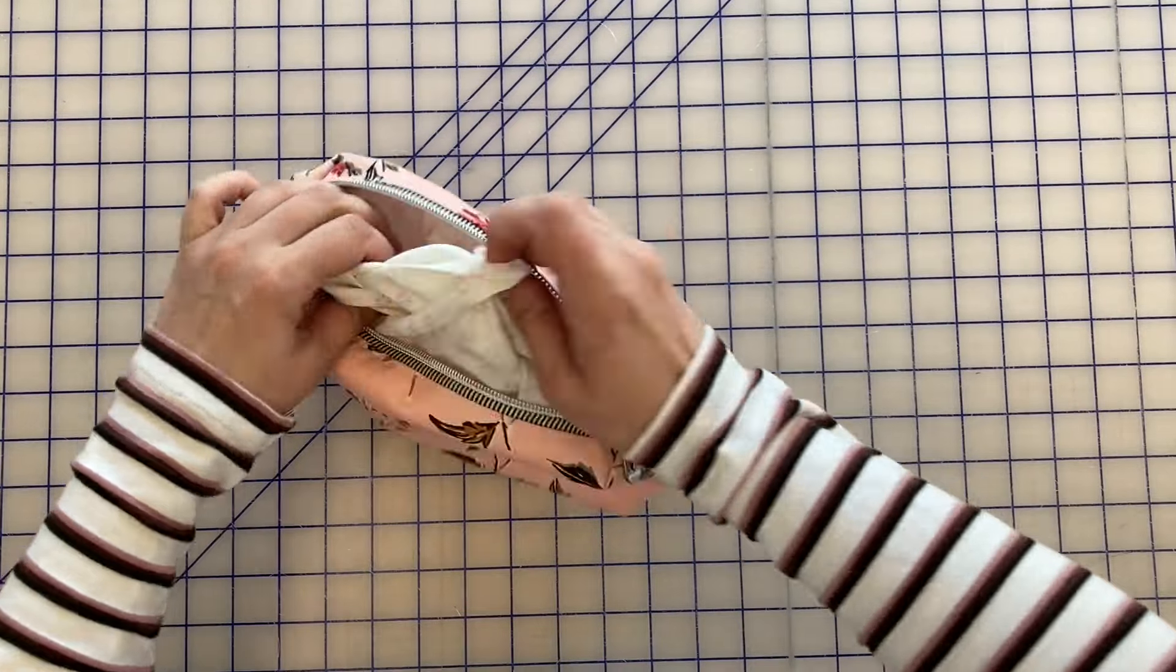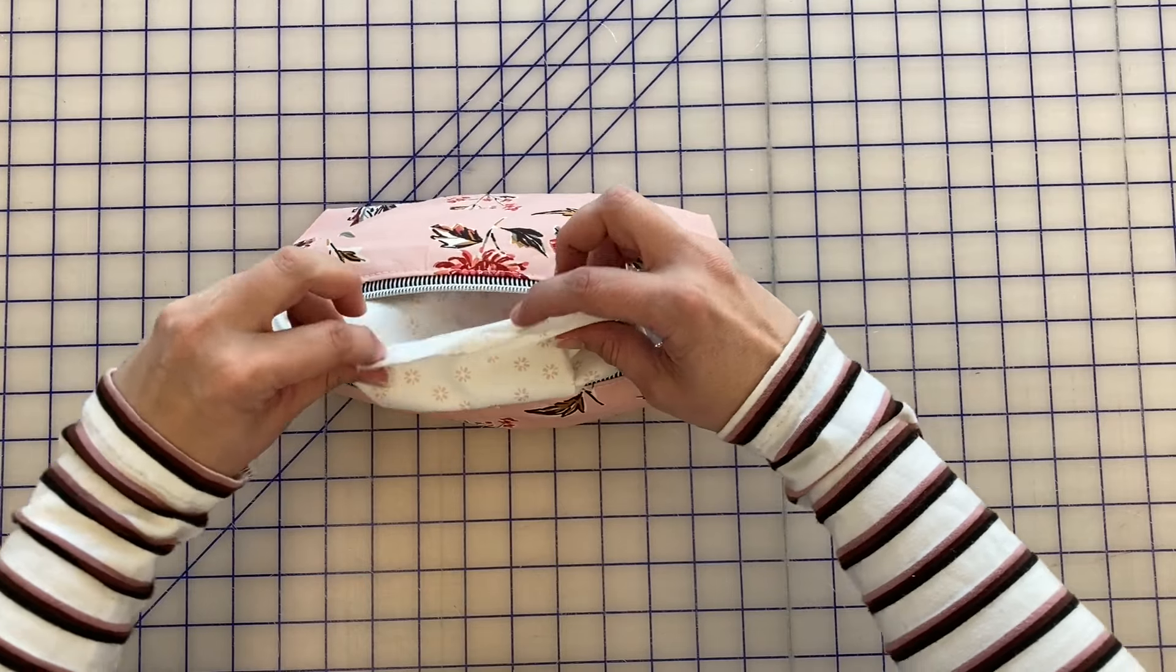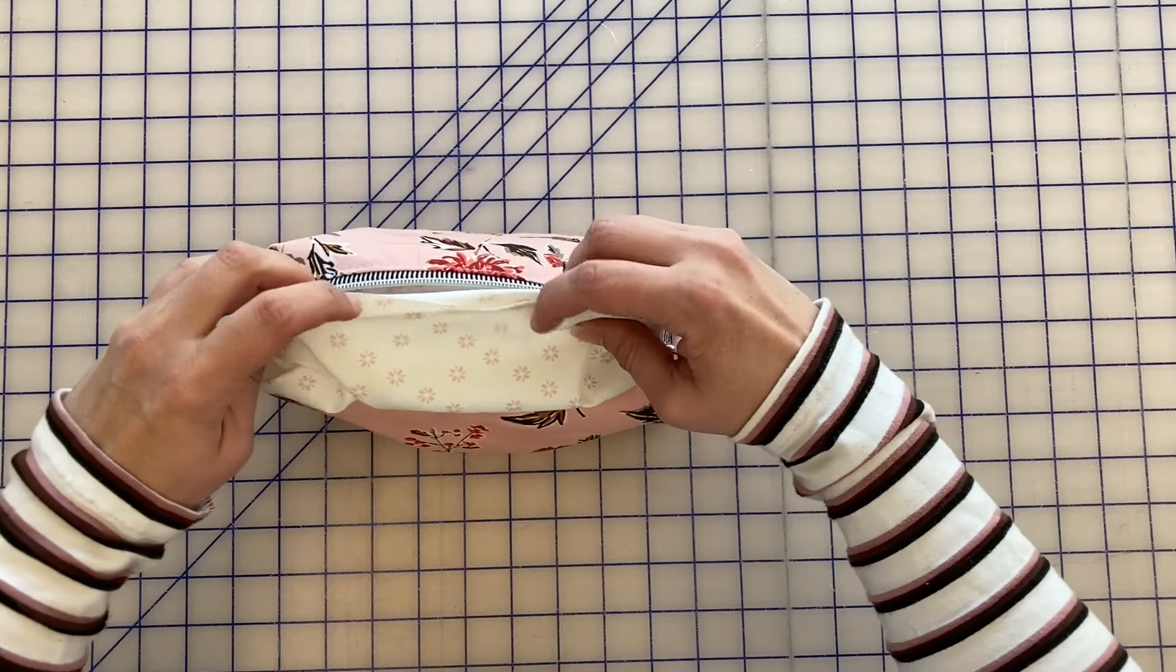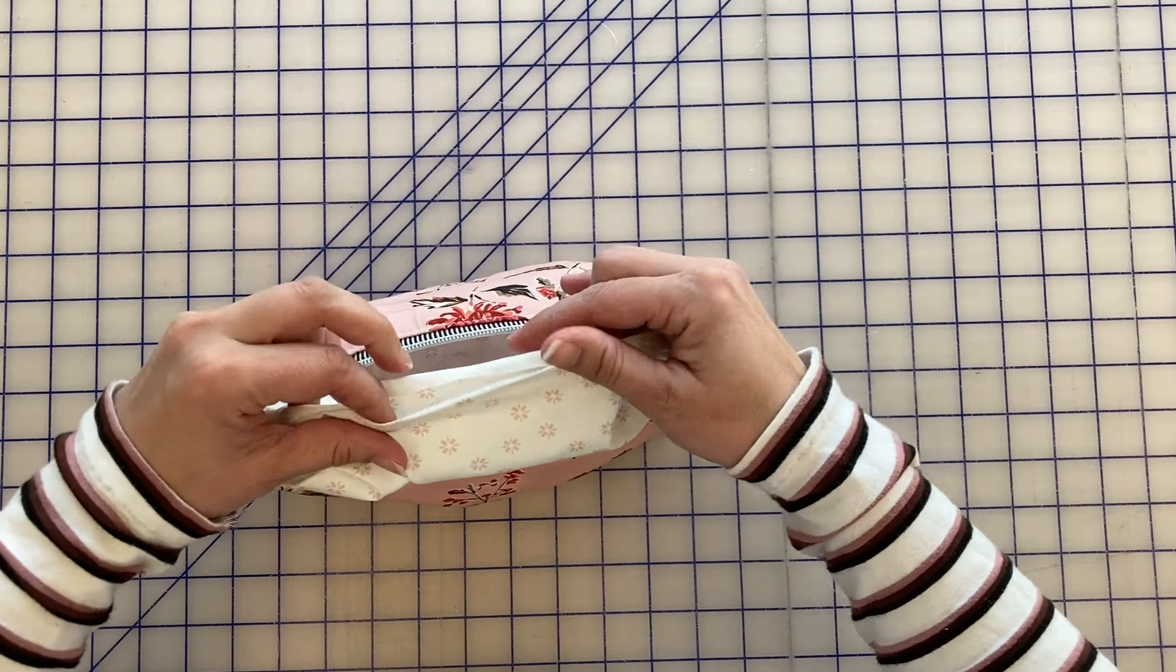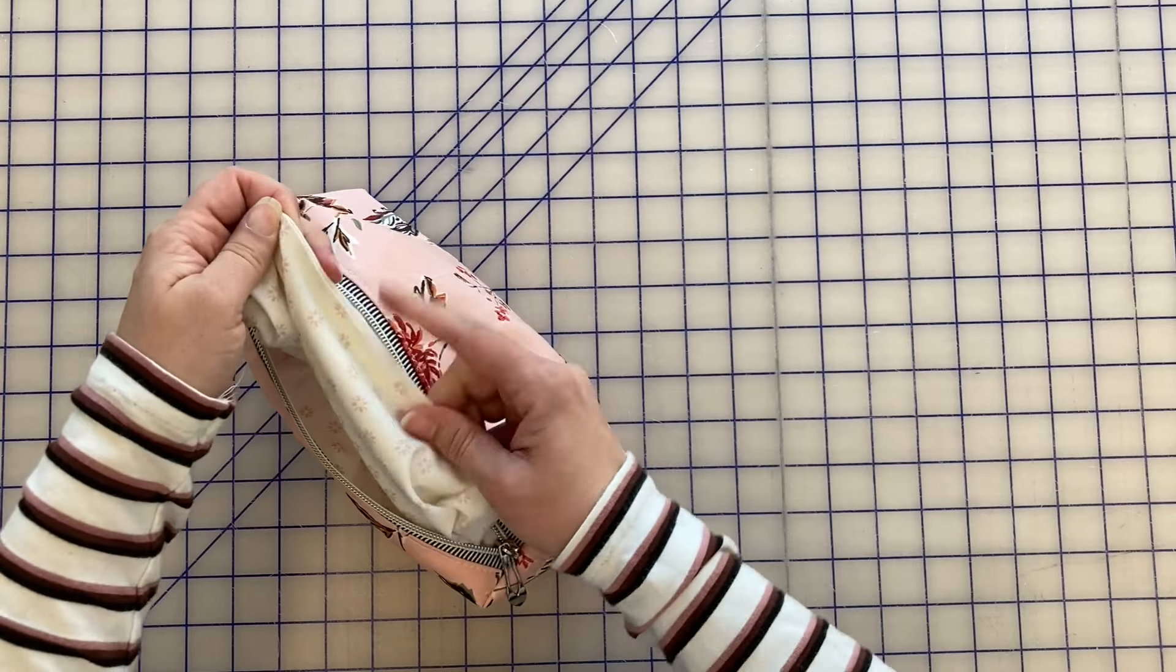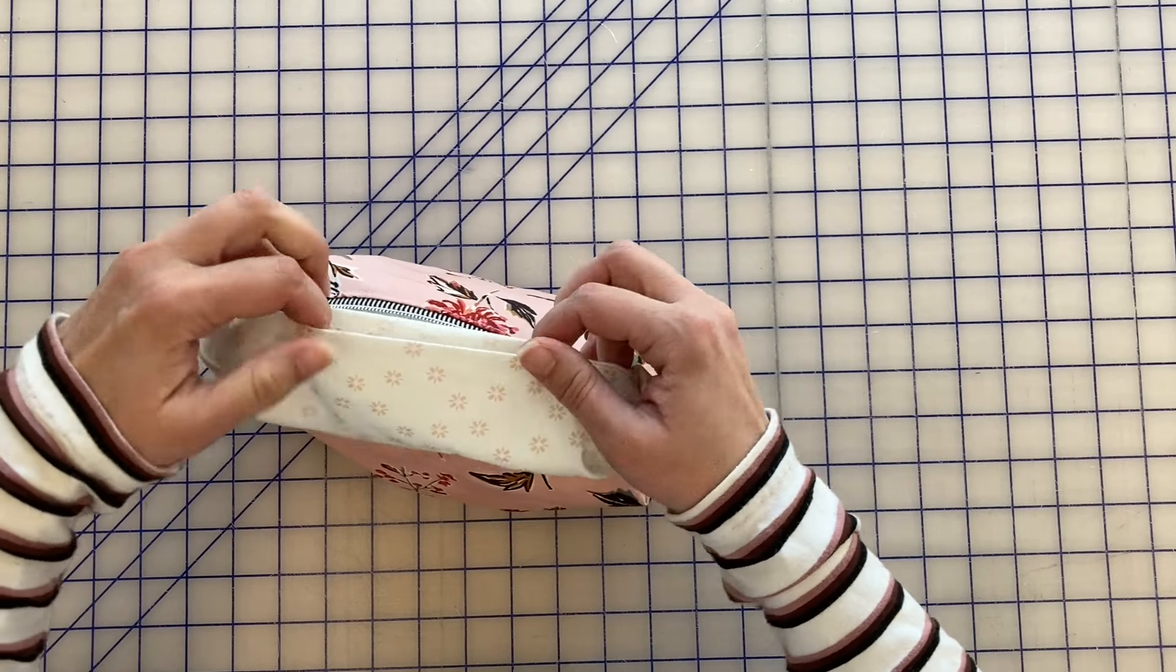So last step, we have this hole in our lining. What I like to do is take it to the machine because I've already pressed it, it should be ready to go, and I'm just going to machine stitch from here to there, the opening. You can also hand stitch it closed.